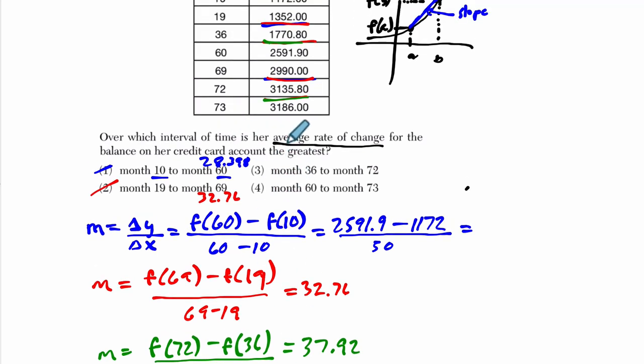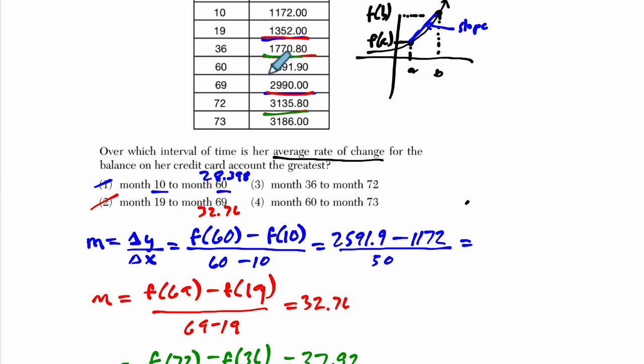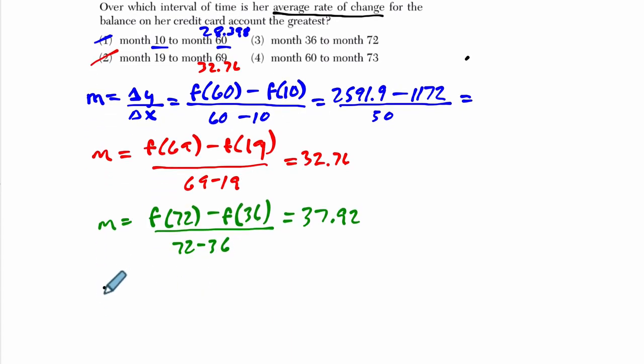And then we go to choice 4. However, we're going from month 60, 2591 to 73. Now, what's difficult about estimating here, for me at least, you're only going up about 600, but it's over 13 months. And so, this doesn't necessarily need to be the smallest. Just because it's increasing the smallest, it's also going over the smallest amount of months. So, 60 to 73. And then I'll talk a little bit about some other estimation techniques that might speed up this process.